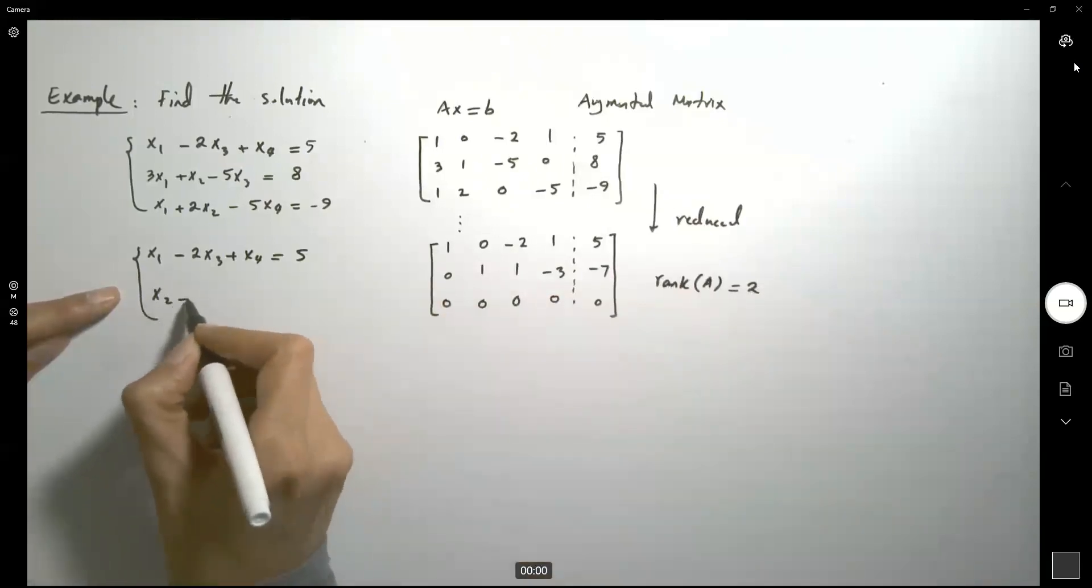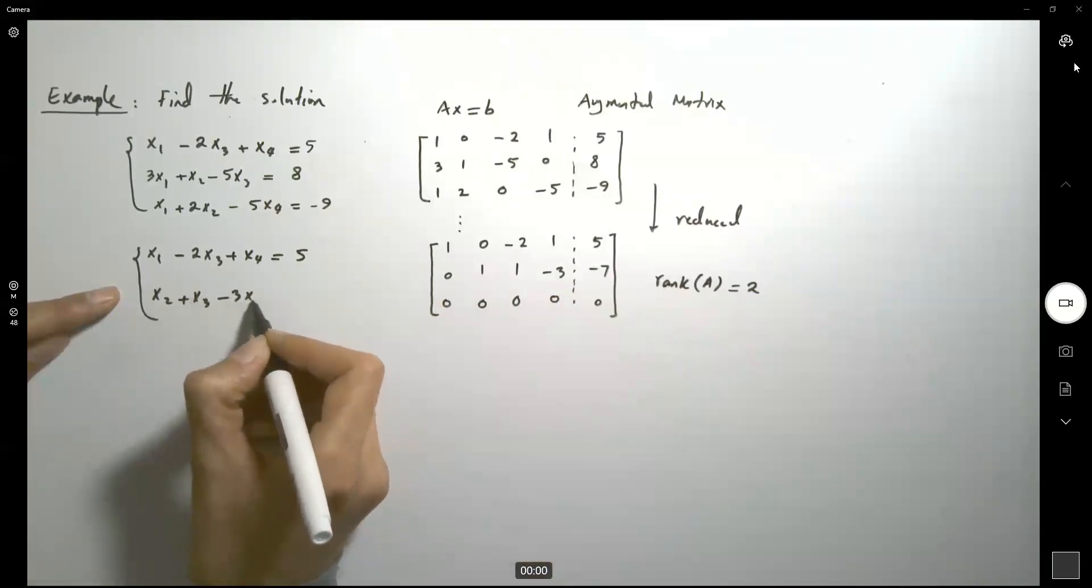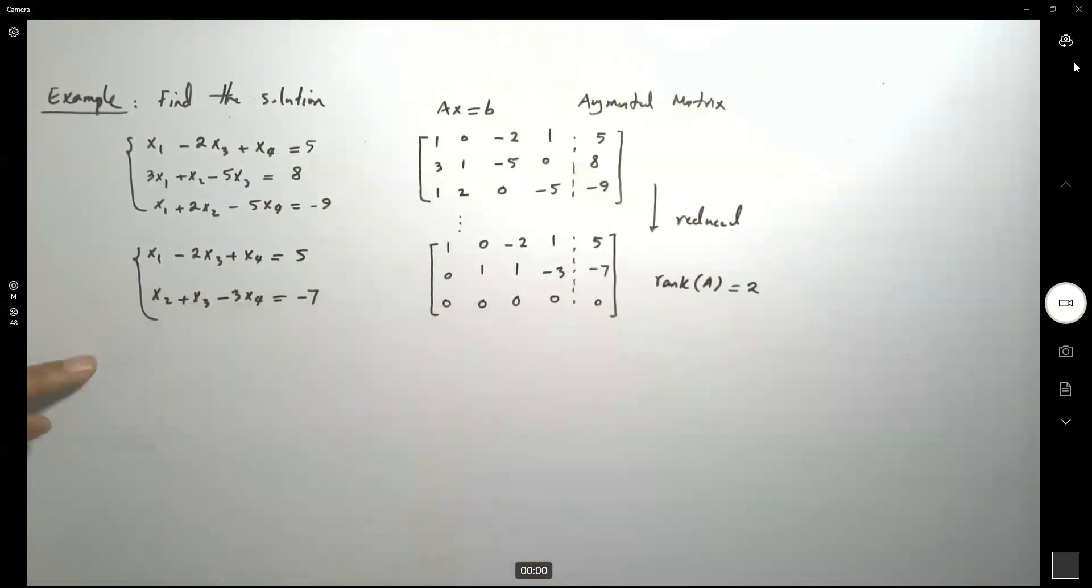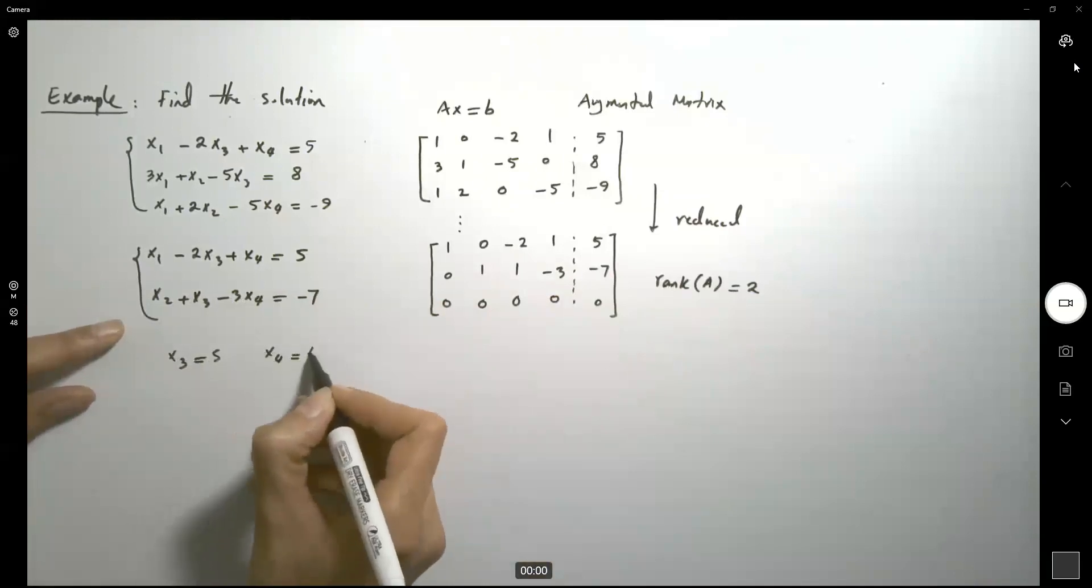And here you have x2 plus x3 minus 3x4 equals negative 7. So basically if we set x3 equals s and x4 equals t, s and t are both scalars.